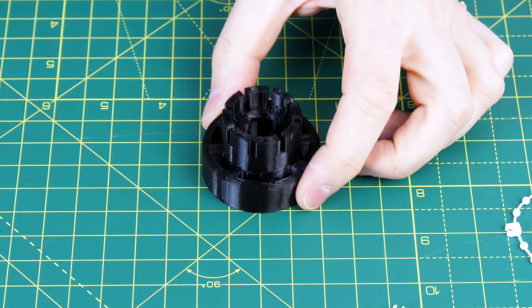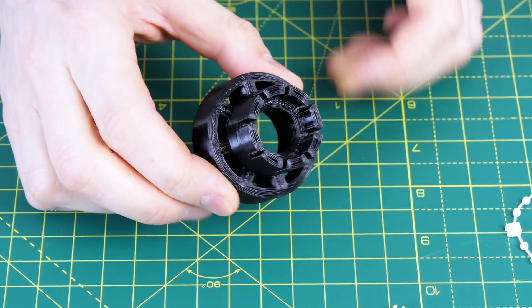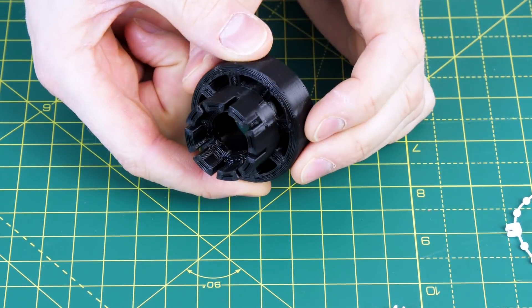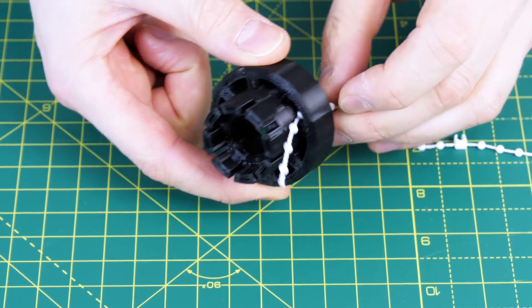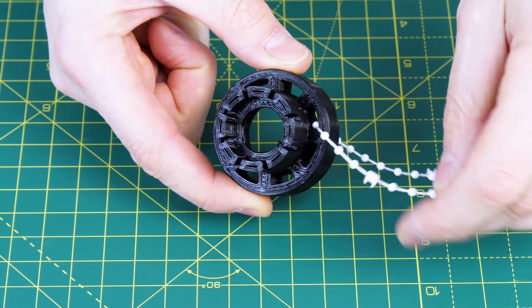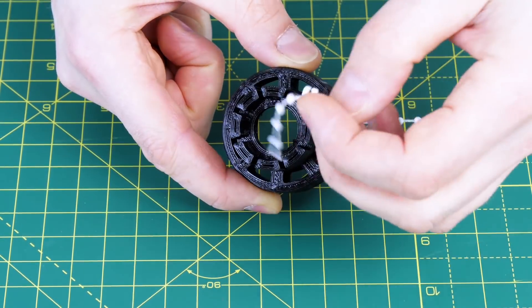I 3D printed some ends to go on my tubes which are push fit and they also have these little castellations and a little ring around with some holes in to poke the cord through. This means I can tension it and lock it in place and it won't easily pull out.